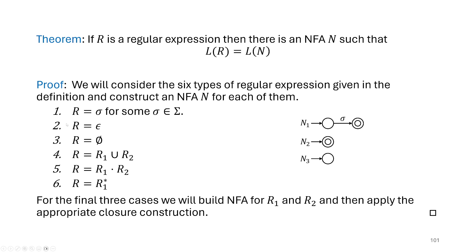The second rule is when the regular expression is just the empty string ε. Again a very simple machine: it has a single state that is an accept state, so it accepts ε, but all other exiting transitions are dead, so any other symbol you get you reject. Copying that same machine but removing the accept state makes it reject every single string — that would be the empty set ∅.